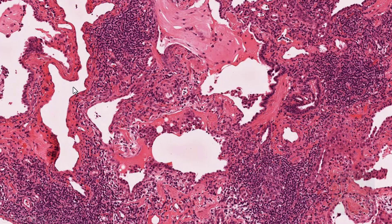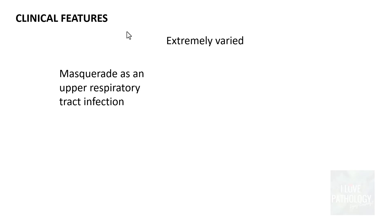Looking at the histologic image: these are alveolar spaces which are free of any exudate, whereas this particular alveolus contains proteinaceous material and the septa is widened, containing many mononuclear cells — lymphocytes, macrophages, and plasma cells. Clinical features are extremely varied; they can masquerade as an upper respiratory tract infection or common cold, or can be a fulminant, life-threatening infection.